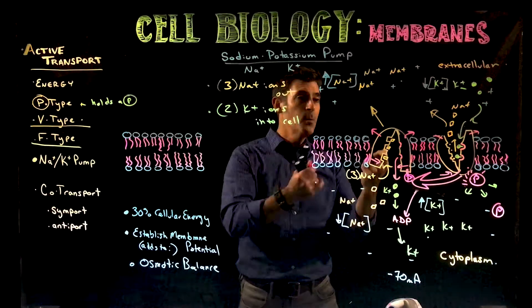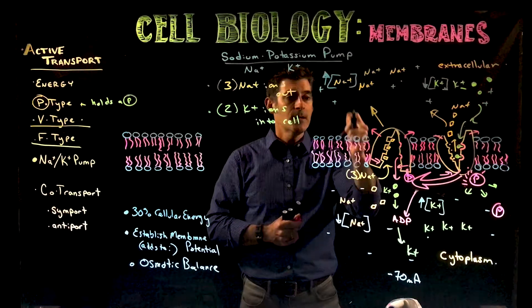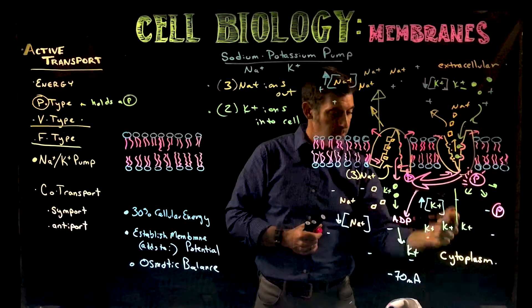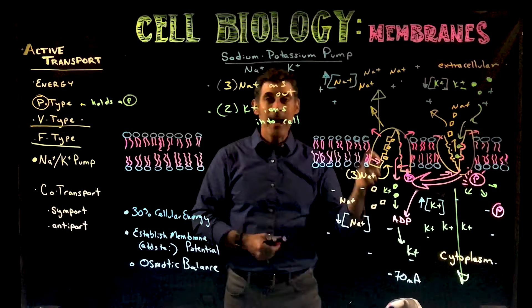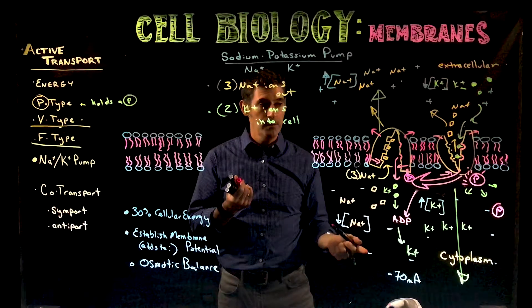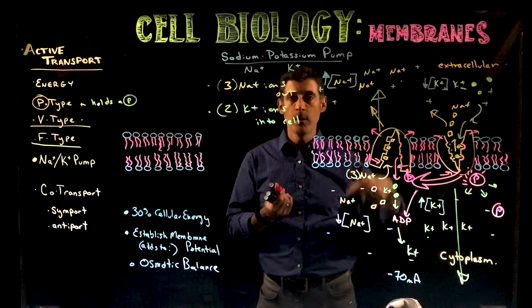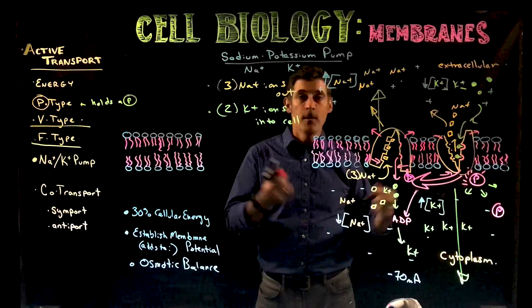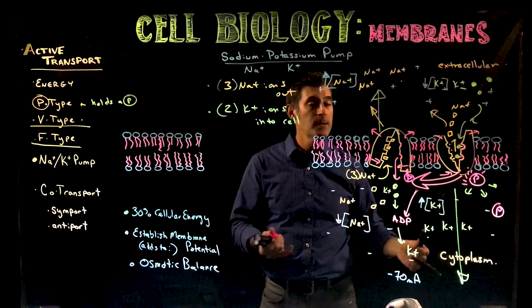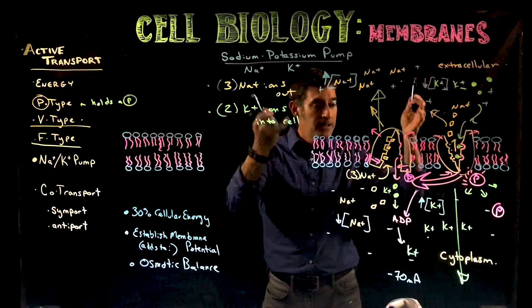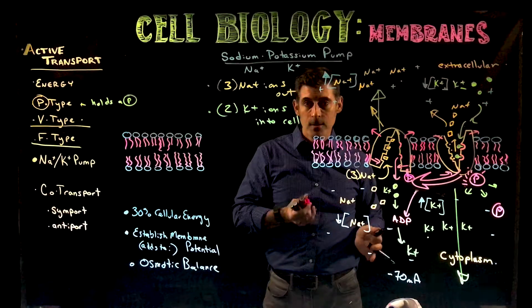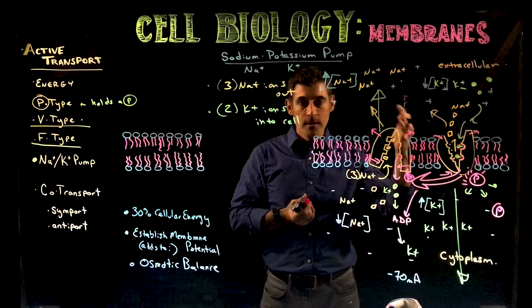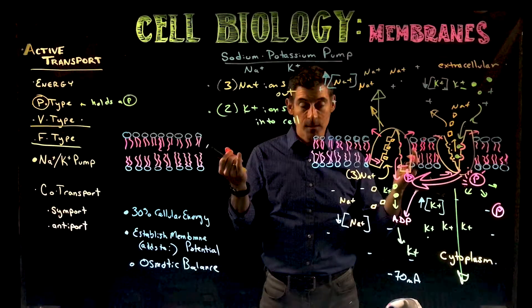The high potassium concentration inside and high sodium concentration outside are both caused by this pump. It moves them in opposite directions — sodium out, potassium in — both moving from low to high concentration; it's active transport in both directions. One ATP handles all five ions total: three sodium one way, two potassium the other.